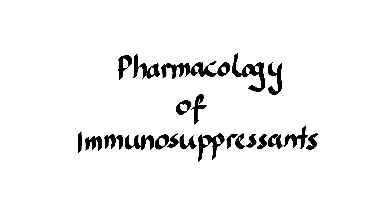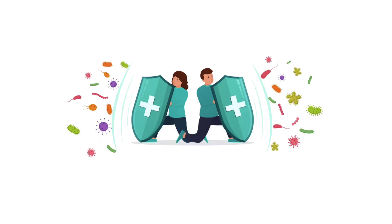The immune system is a complex network of cells and proteins that work together to defend the body against substances it sees as harmful or foreign. The human immune system has two levels of immunity: innate and adaptive. The innate immunity is non-specific and fast-acting and serves as the primary line of protection against pathogen invasion.